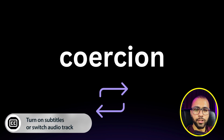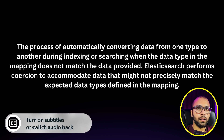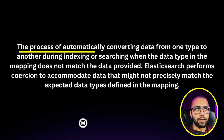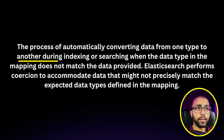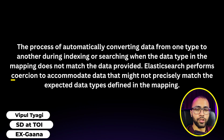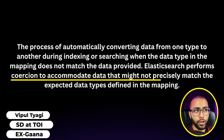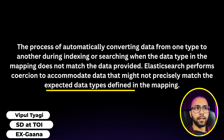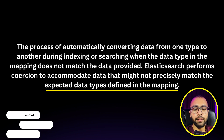In this video, we are going to study coercion in Elasticsearch. It is defined as the process of automatically converting data from one type to another during indexing or searching. When the data type in the mapping does not match the data provided, Elasticsearch performs coercion to accommodate data that might not precisely match the expected data types defined in the mapping.